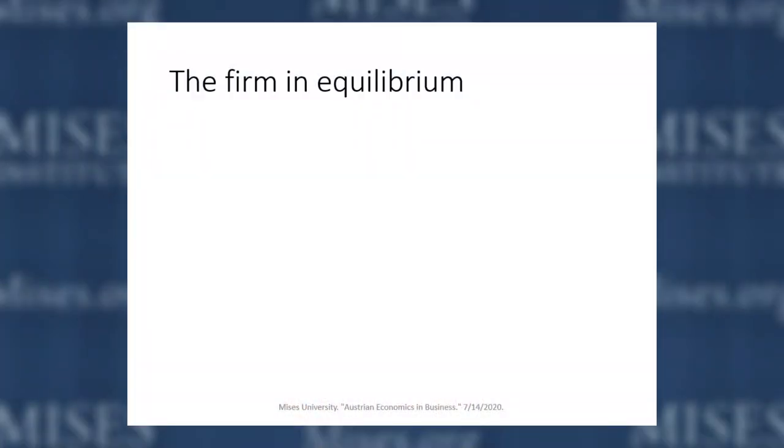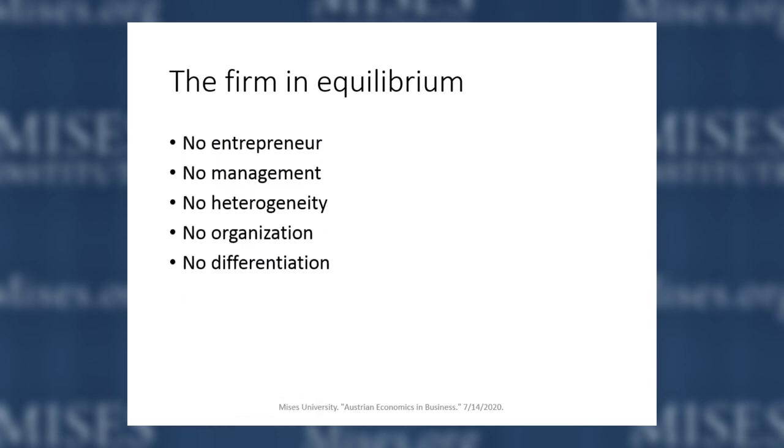As in Dr. Klein's lecture, in equilibrium this might make some kind of sense. But the world is not in equilibrium — the economy is always in disequilibrium. There is a way of earning money, a way of making profits that is not really shown in this simple schematic and production function. So what is the firm like in this equilibrium world?